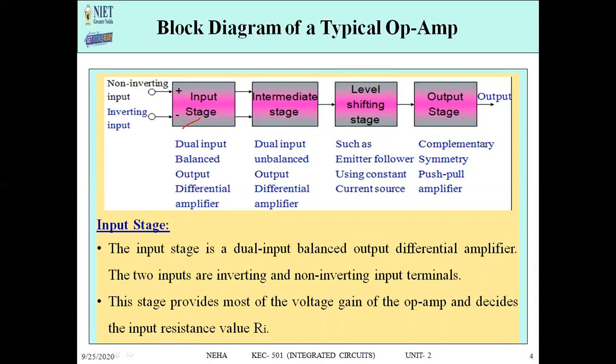The input stage is connected to the intermediate stage, which is then connected to the level shifting stage, and the level shifting stage is connected to the output stage where you get the final output. The input stage is a dual input, balanced output differential amplifier — two inputs and a balanced output. One is the inverting input and one is the non-inverting input. This stage provides the voltage gain in the OPAM.